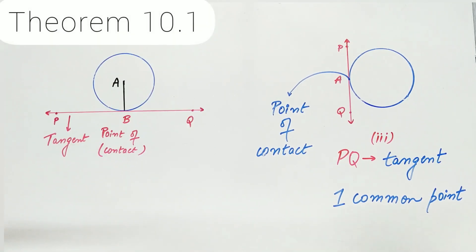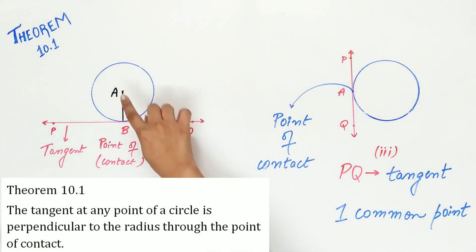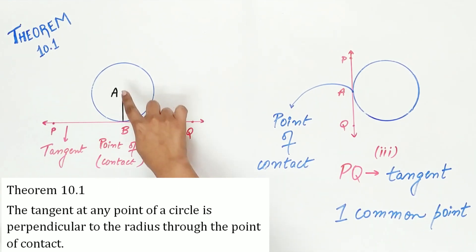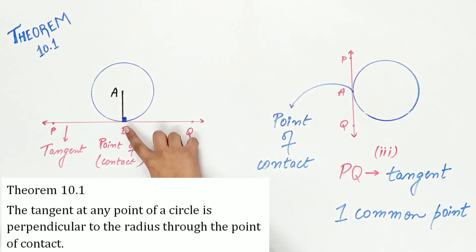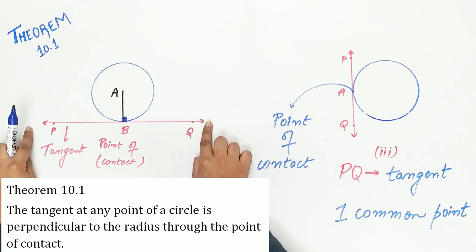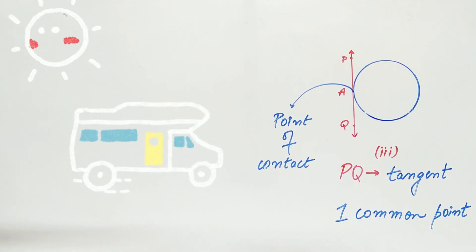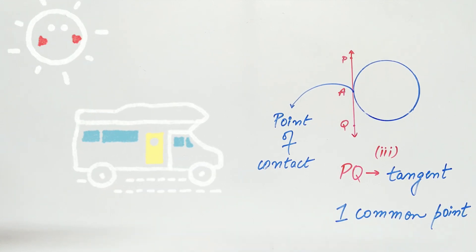Since we know about circles and the tangent, let's look at Theorem 10.1. Theorem 10.1 says the tangent at any point of a circle is perpendicular to the radius through the point of contact. That means the radius of a circle is perpendicular to the tangent of the circle. Since we have learned about circles, the tangent, and Theorem 10.1, we are ready to solve Exercise 10.1. So let's dive in.